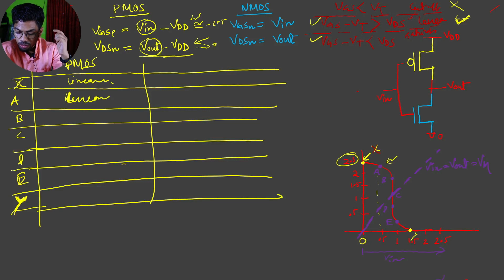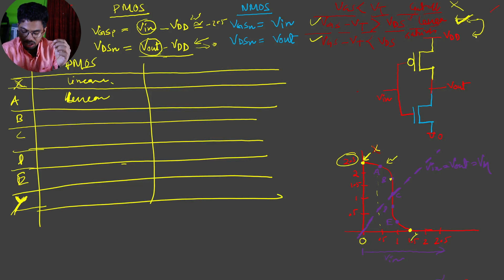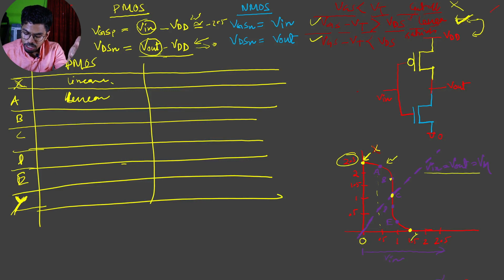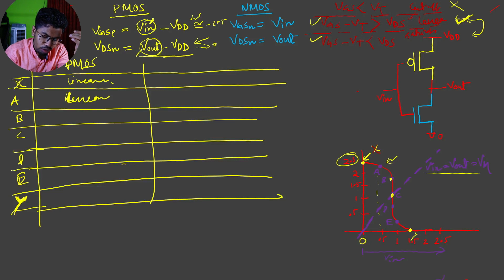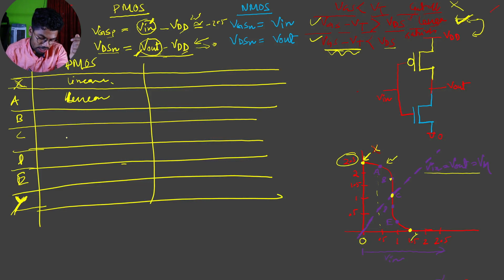At point B it will also be in the linear region. We move from linear to saturation only after V_in starts getting larger than V_out. Consider point C — the midpoint where V_in = V_out = V_M. Putting these values in: V_GSp = V_DSp exactly, but the saturation condition has a minus V_T term, so |V_GS| − |V_T| is less than |V_DS|. Therefore, at point C, the PMOS is in the saturation region.